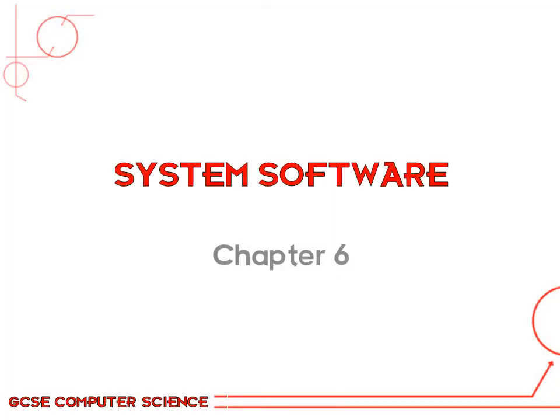System software is designed so a computer system can run smoothly and be well maintained. The main piece of system software is the operating system, or OS for short. This chapter will cover all of the purposes and main features of an operating system.